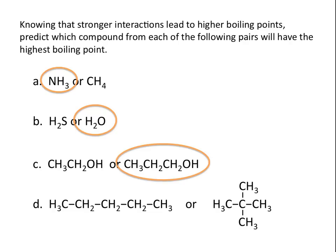In D, we're given two molecules: pentane and neopentane. They are both comprised of the same number of carbon atoms and the same number of hydrogen atoms, but pentane is a straight chain molecule while neopentane is a branched, more condensed molecule. Because these two molecules have similar molecular weights, the London dispersion forces won't differ on size alone. But you will see greater London dispersion forces in pentane, the straight chain molecule, because straight chain molecules have a better chance to interact with other molecules. So pentane will have the higher boiling point.